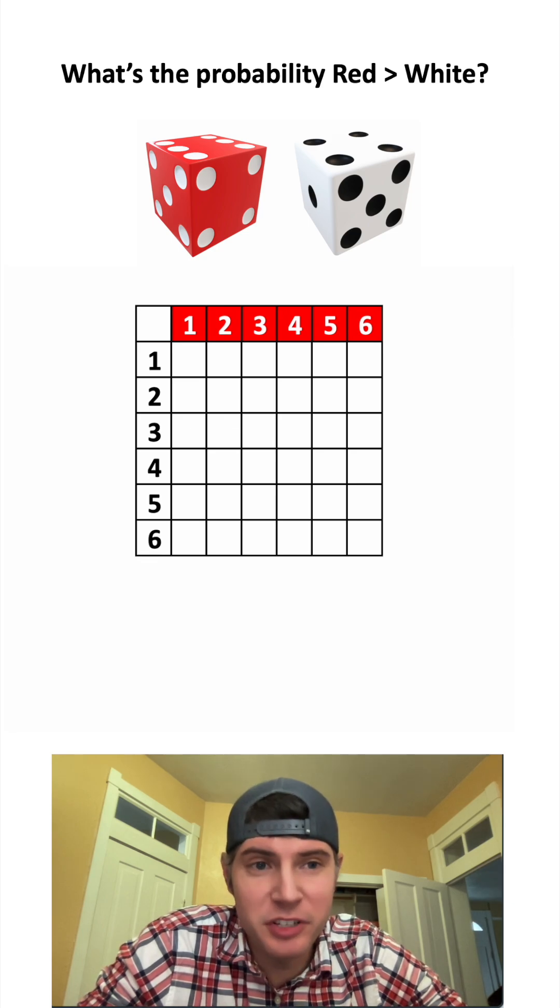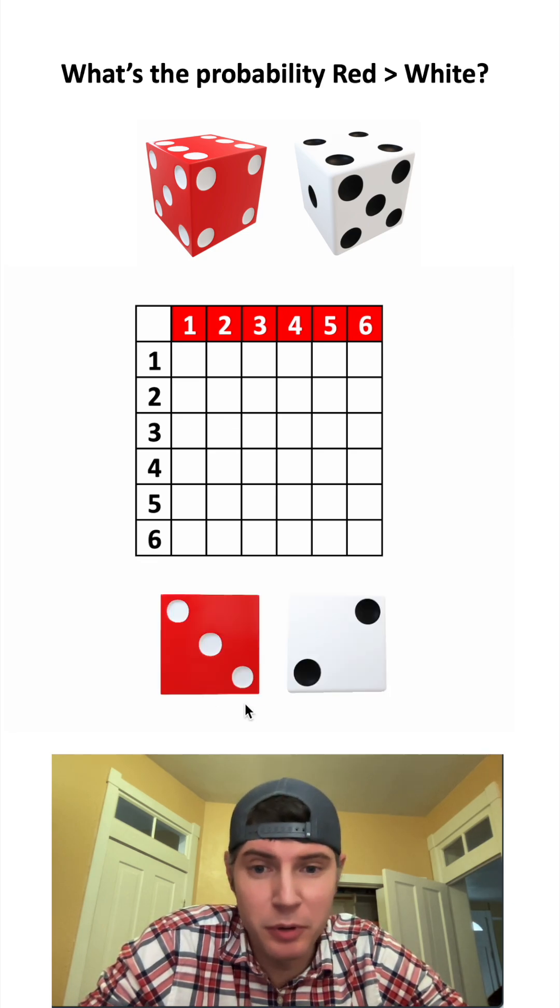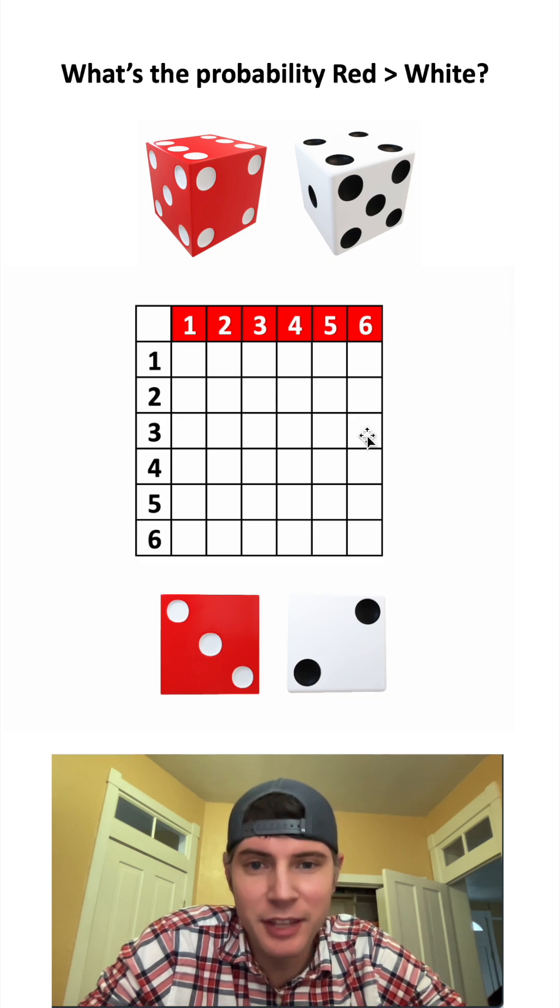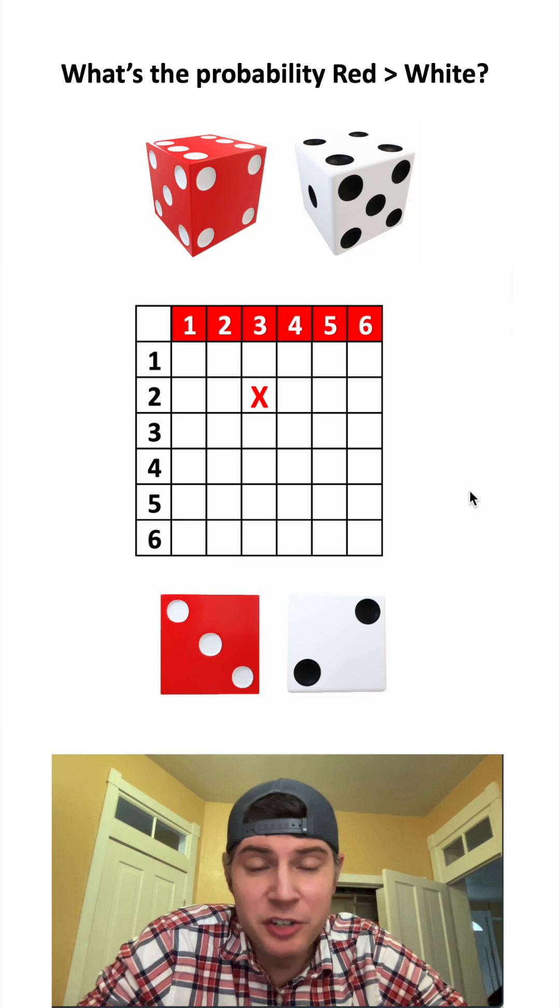So we're interested in all the places where the red one is greater than the white one. Here's one example where the red one's bigger than the white one, where the red is 3 and the white one is 2. That's going to be this box right here. But we're interested in all the situations where the red one is bigger than the white one.